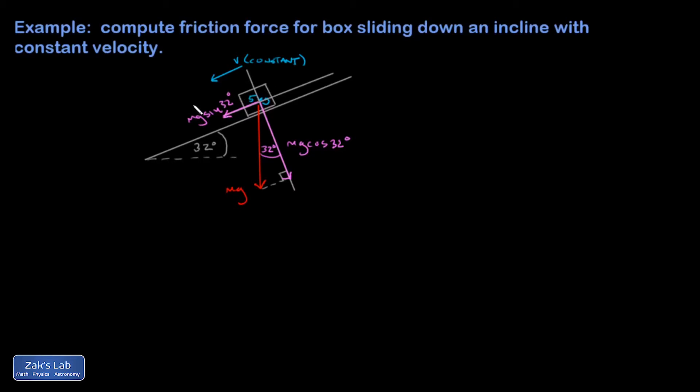I have a normal force here. It's not going to enter into the calculations, but I'll just do it for completeness. Since the block can't accelerate perpendicular to the ramp, like squishing into the ramp or jumping off of it, the normal force must be exactly balancing the perpendicular component of gravity.